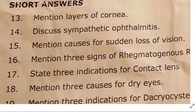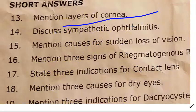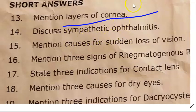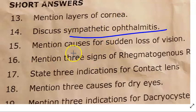Short answers: layers of the cornea — epithelium, stroma, endothelium, Bowman's membrane (basement membrane of epithelium), Dua's layer, and Descemet's membrane (for the endothelium). Sympathetic ophthalmitis: one eye is the exciting eye, the other becomes the sympathizing eye — write the theories.